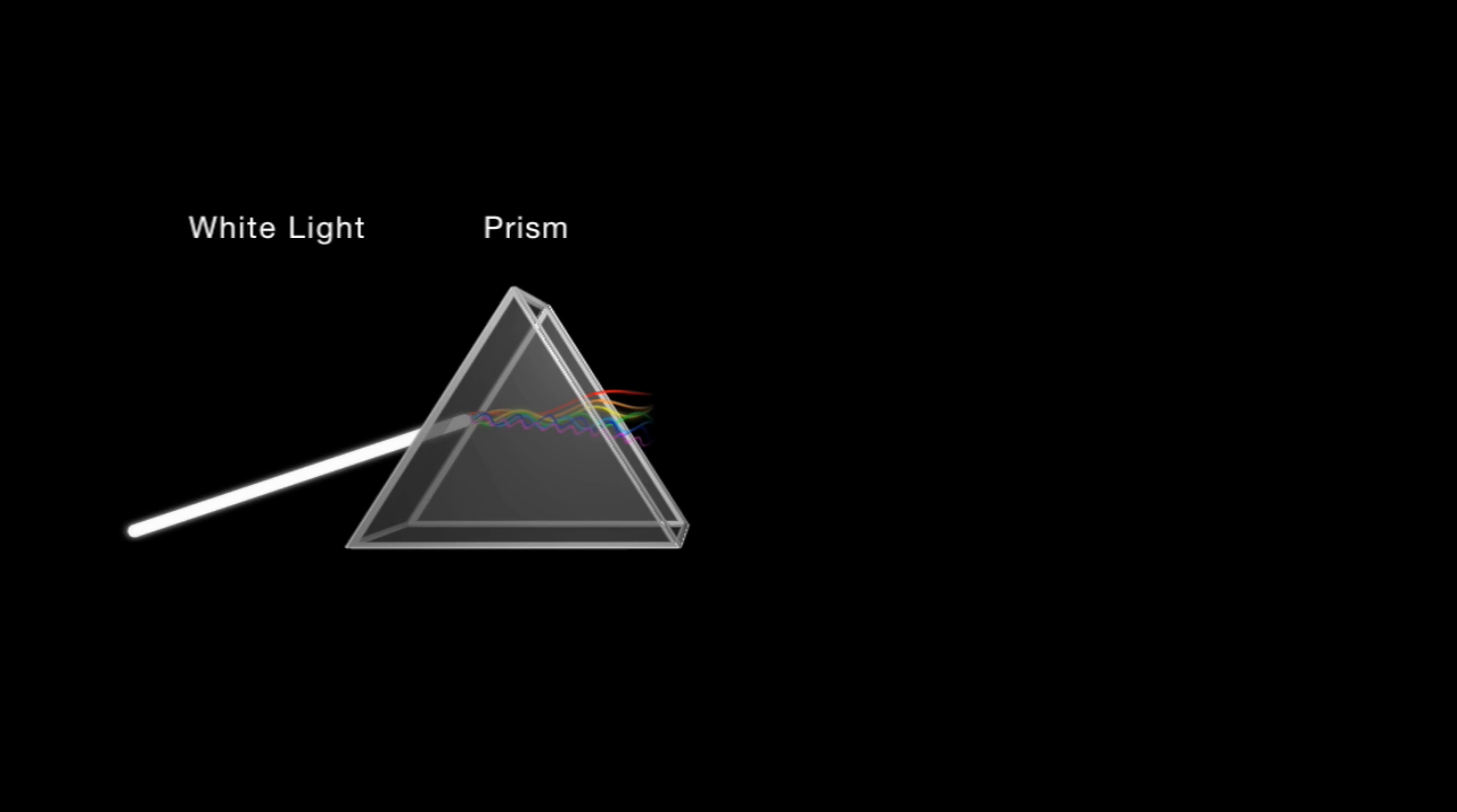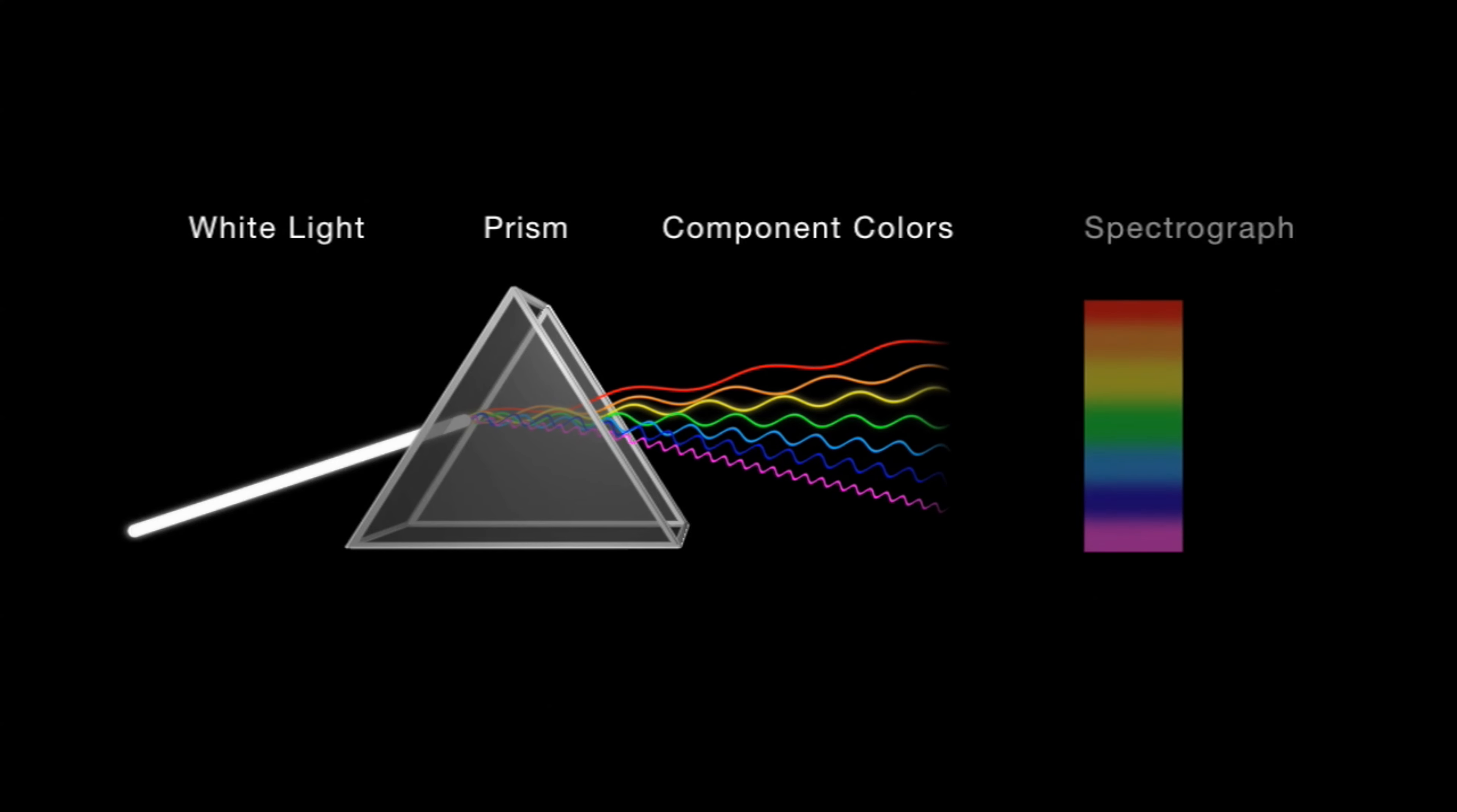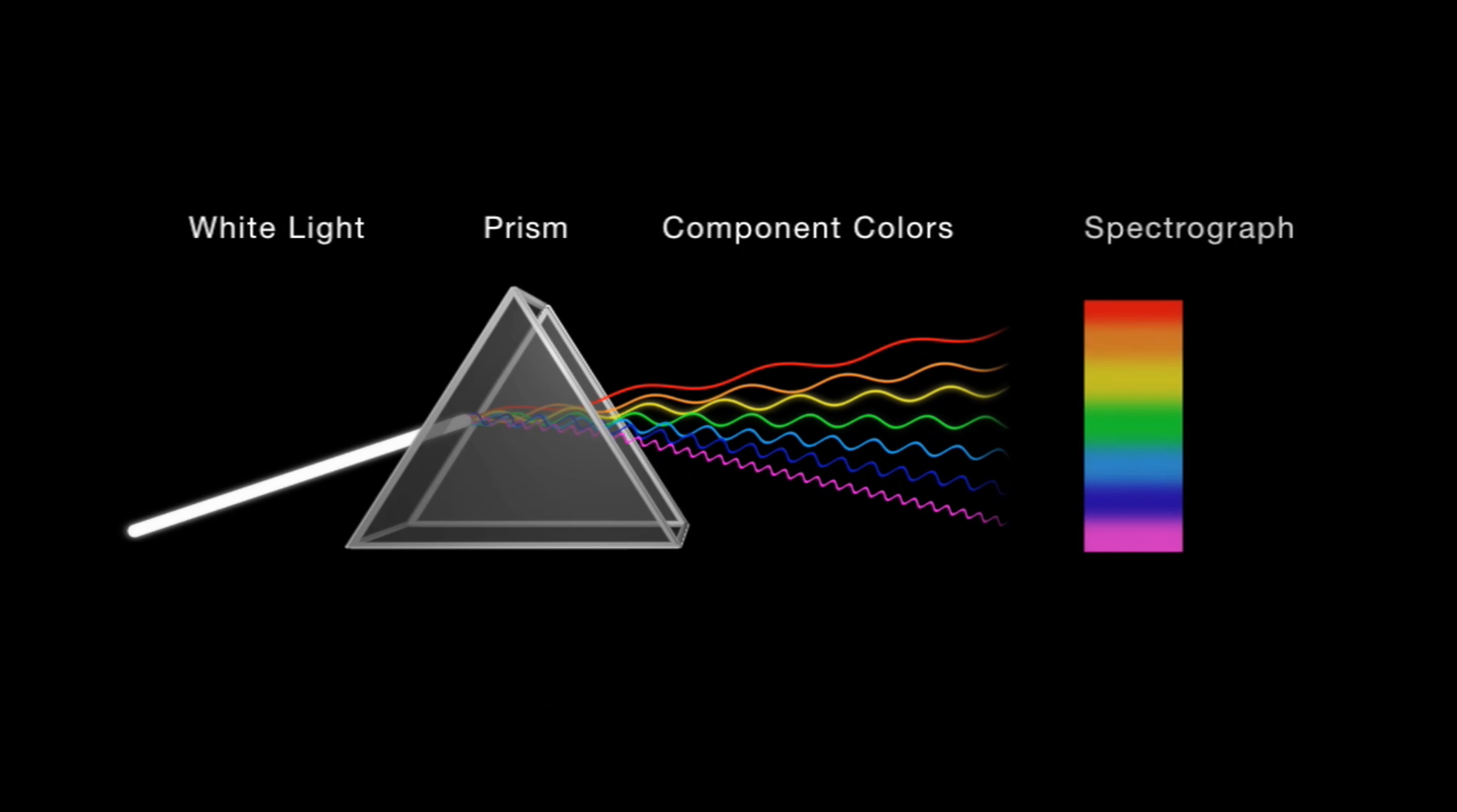Each color in the visible spectrum corresponds to electromagnetic waves of different wavelengths. As the wavelengths increase, the colors change in the following order: violet, indigo, blue, green, yellow, orange, and red.